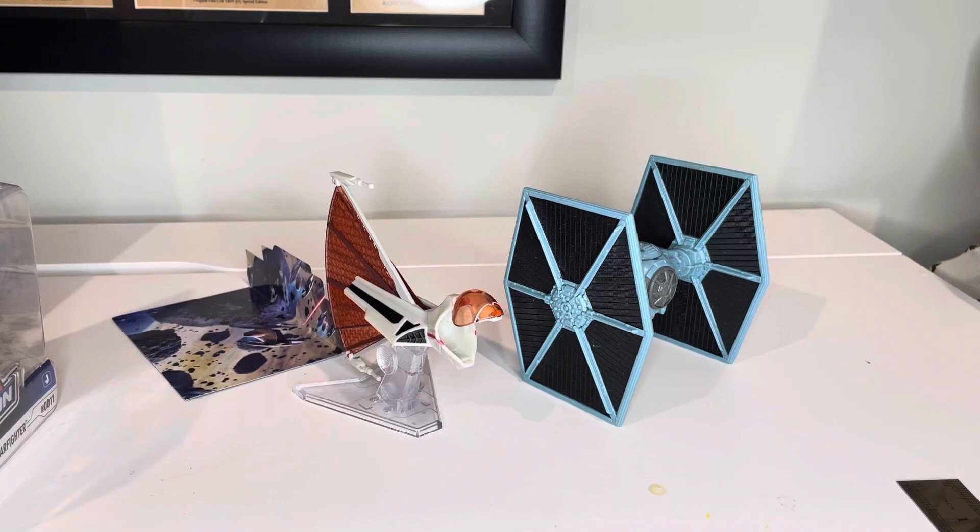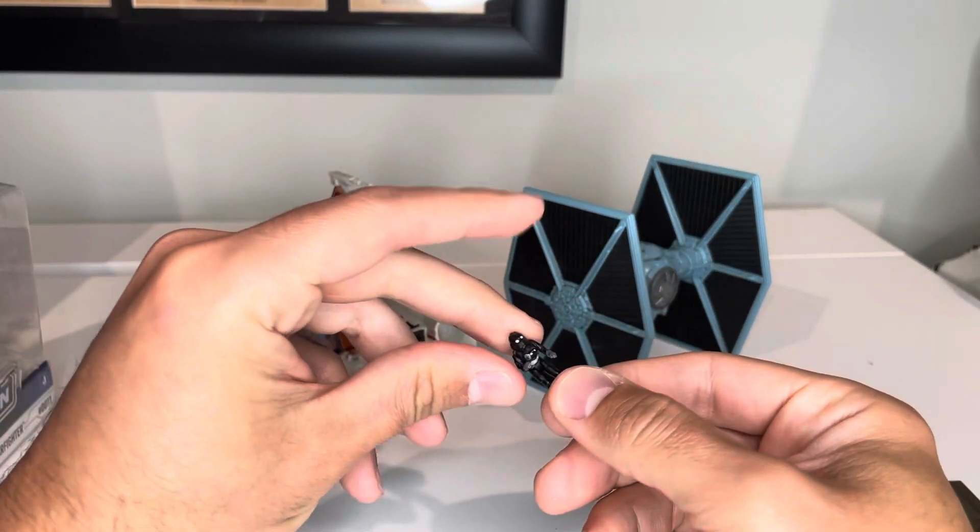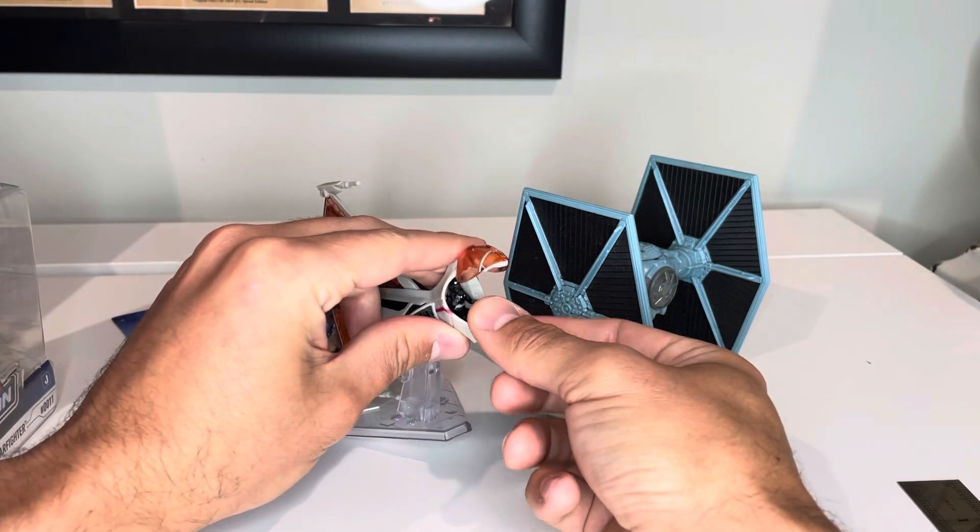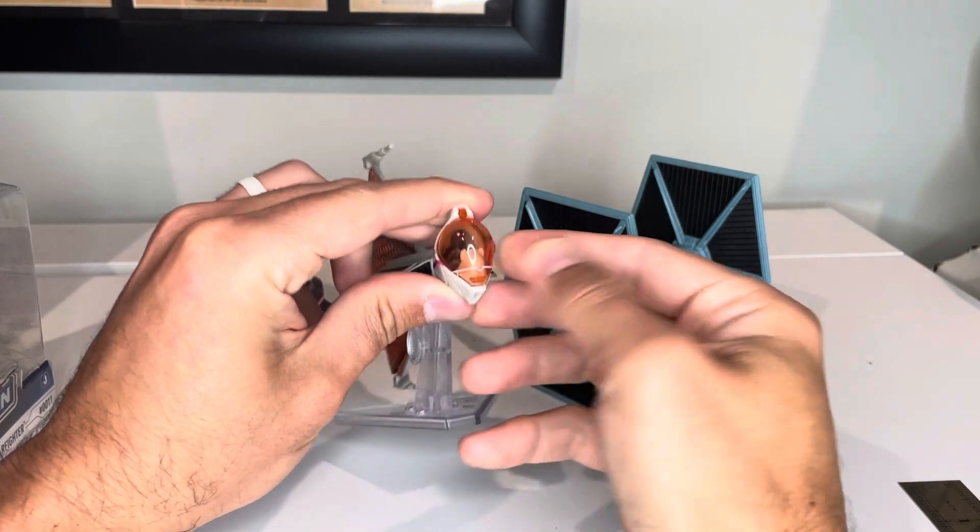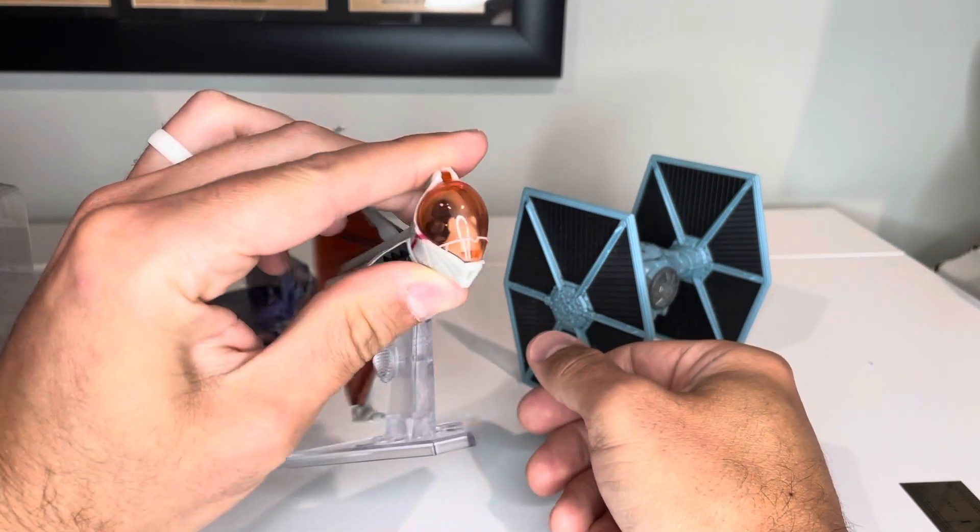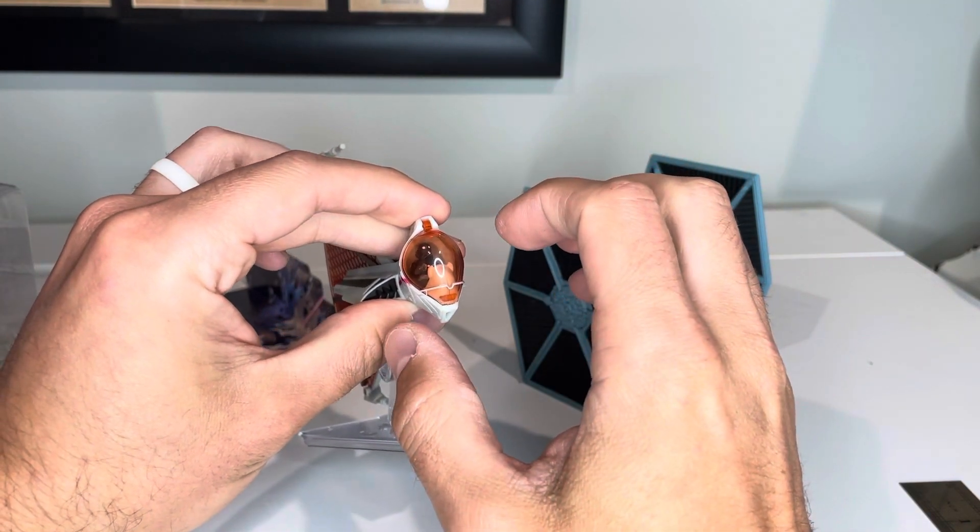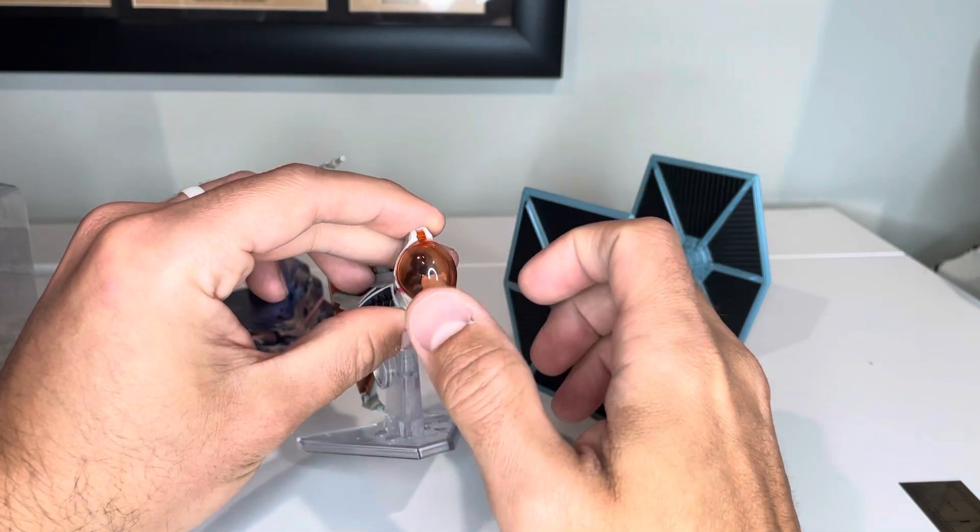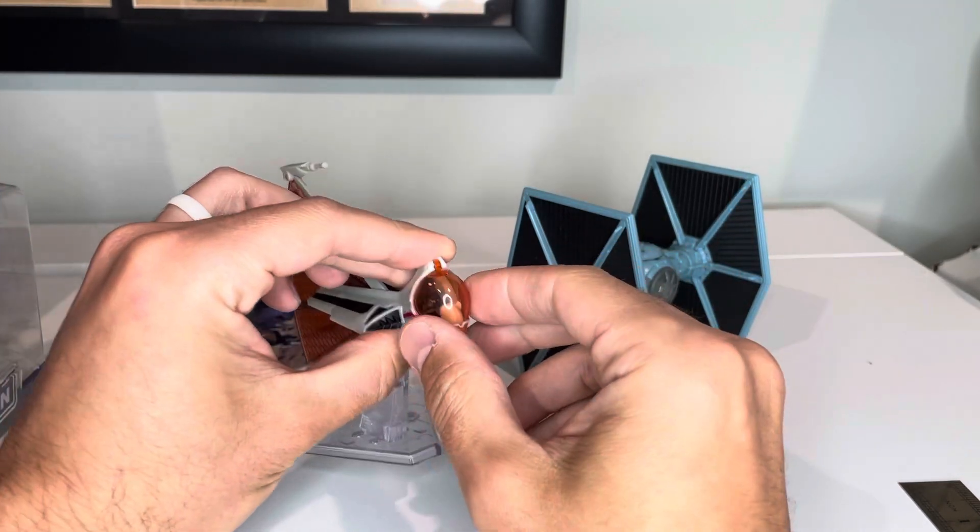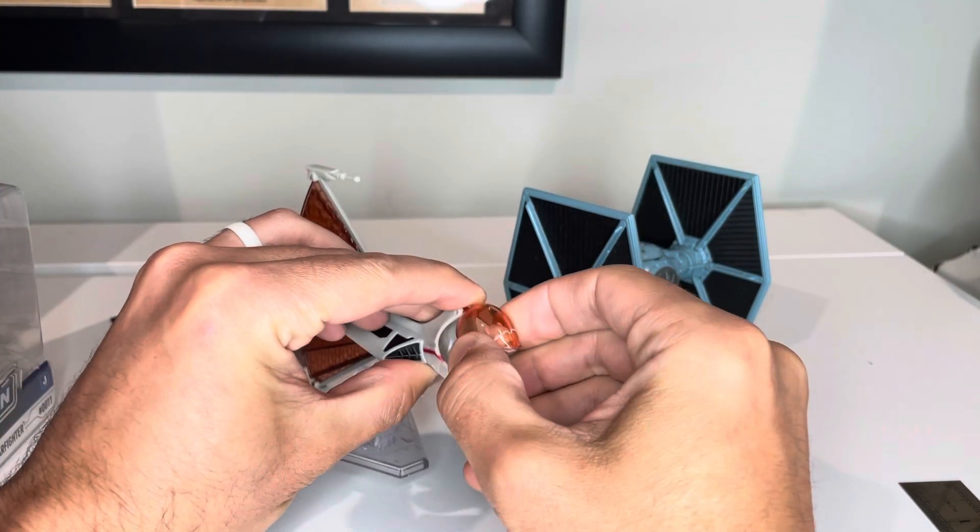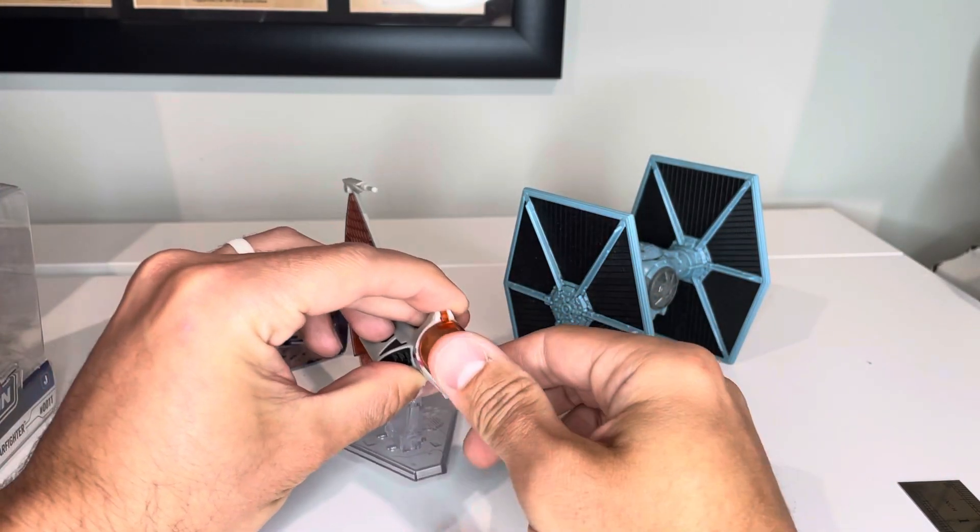Could you fit an action fleet figure inside of this? If we took a TIE Pilot and try to put them in there, there we go, it fits. I've been seeing that a lot with these, that sometimes the action fleet figure will actually fit in it, sometimes it won't. I think it's going to be a toss up there. For the most part they'll fit in a lot of the ships.